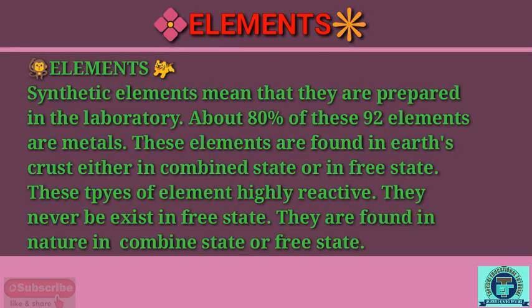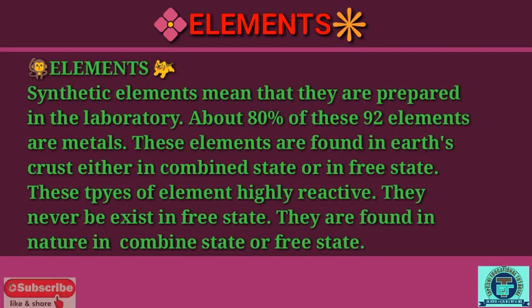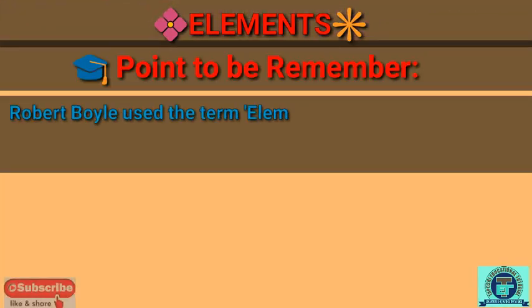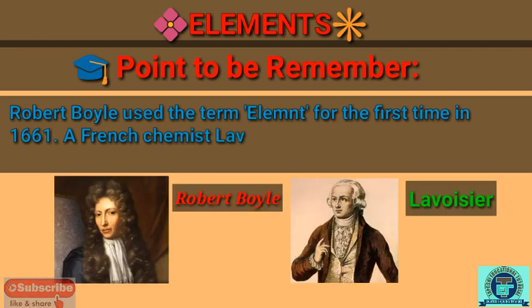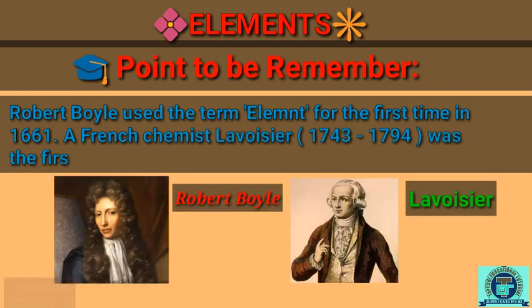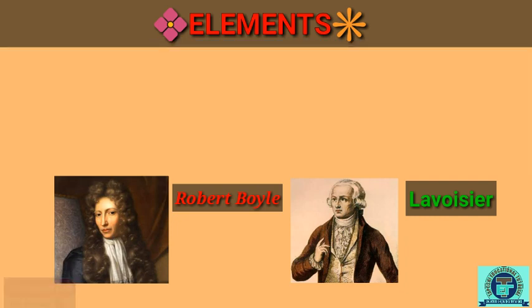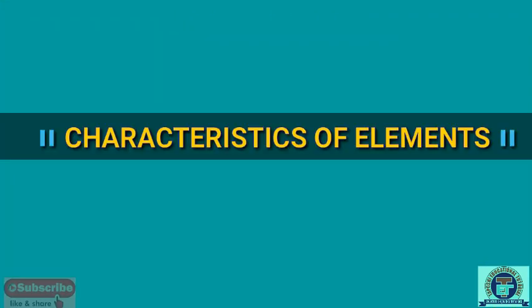These elements are found in the Earth's crust in the combined state or in the free state. Highly reactive elements are never found in the free state — they are found in nature in the combined state. Robert Boyle used the term 'element' for the first time in 1661. A French chemist was the first person who defined elements.